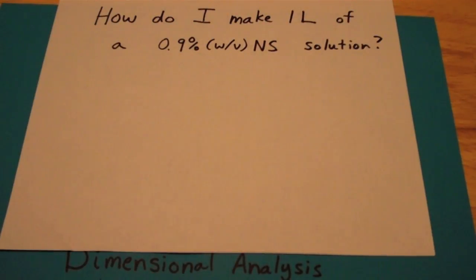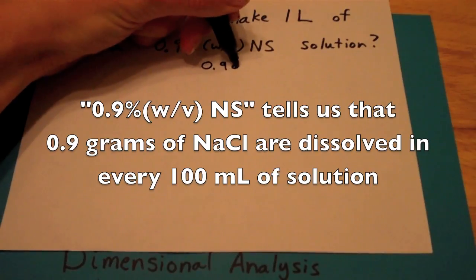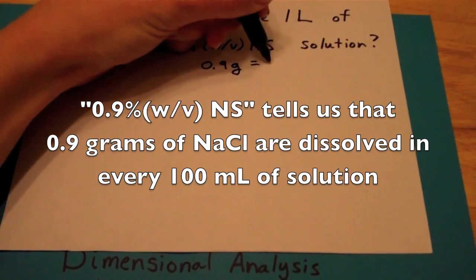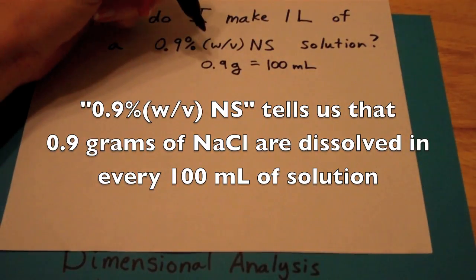So how do I make one liter of a 0.9% weight/volume normal saline solution? 0.9 grams in every 100 milliliters of solution.